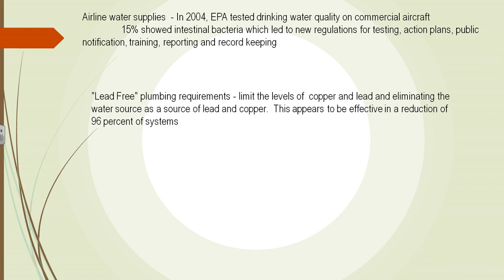The EPA also tested commercial aircraft water. Fifteen percent showed intestinal bacteria — for example, E. coli — in airline water supply systems. Consequently, new regulations were developed for testing. Action plans had to be developed, the public had to be notified, and flight attendants had to be prepared to prove that the water was safe for drinking.